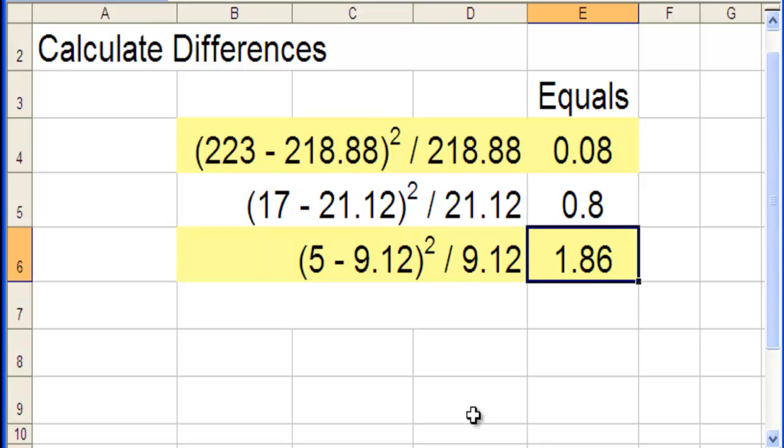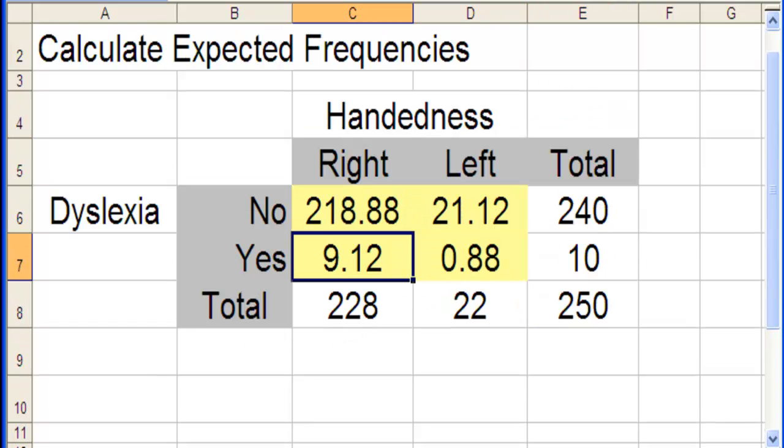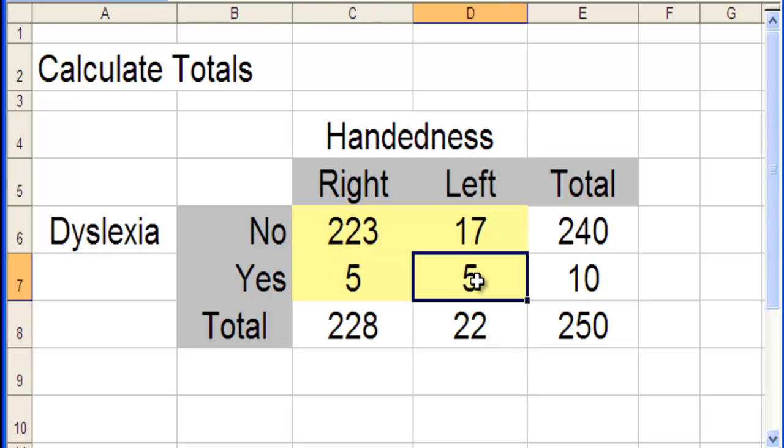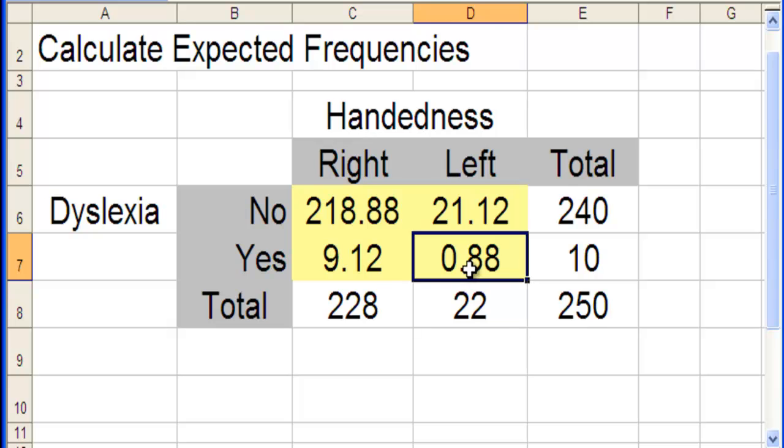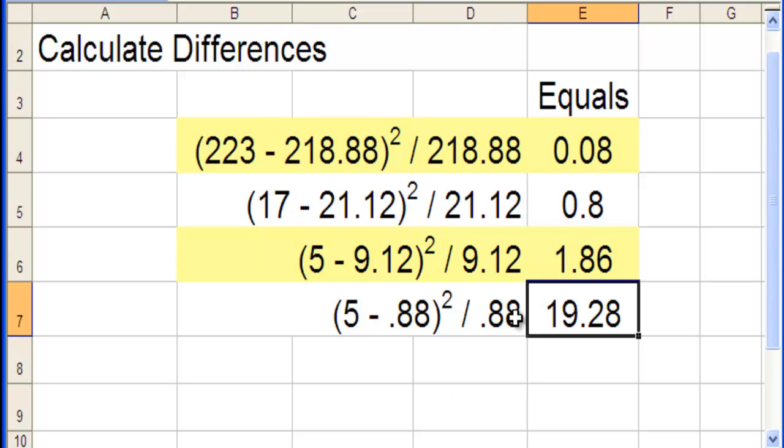Now for the final one. 5 minus 0.88 squared divided by 0.88 gives a whopping 19.28. Where'd I get those numbers? The observed cell frequency minus its corresponding expected cell frequency, squared, and then divided by the expected cell frequency. So then we get 19.28.